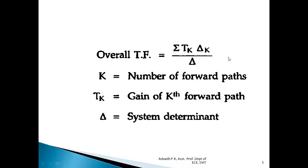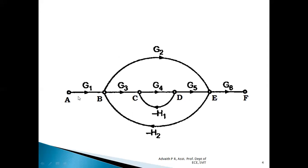Let us consider what exactly is meant by Tk, the gain of the kth forward path. Observing this signal flow graph, we can clearly identify that there are two forward paths. A forward path is a path connecting from the source node to the sink node. The first path goes A→B→C→D→E→F, and the second forward path goes A→B→E→F. So there are two forward paths.